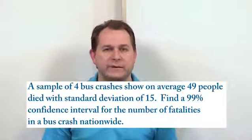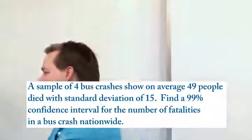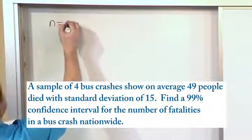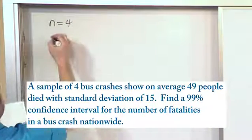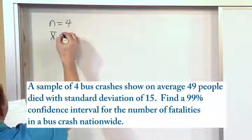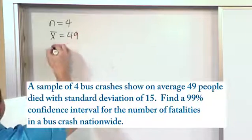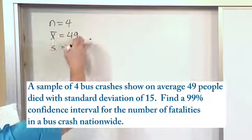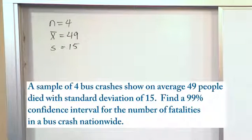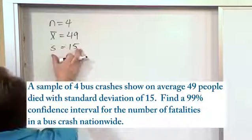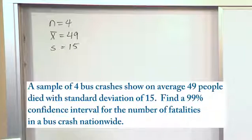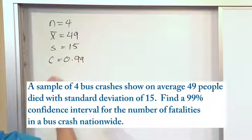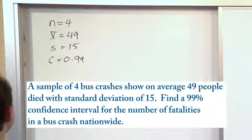So we use the techniques with the student t distribution that we have. Let's write our information down. The sample size is simply four. And of those four bus crashes, the average number of fatalities was 49. And the standard deviation was 15. So that means some crashes had less than 49, more than 49 fatalities in those four crashes. So here's kind of a measure of that with the standard deviation of 15. And the level of confidence is 0.99 because this is a 99% confidence interval, as we've said before.